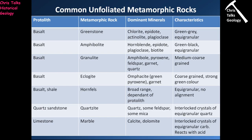The first type of unfoliated metamorphic rock is hornfels, created by contact metamorphism of a basalt or shale - high temperature, low pressure, so nothing makes the minerals align. Contact metamorphism of a sandstone and limestone gives quartzites and marbles respectively. Importantly, quartzites and marbles are not limited to contact metamorphism - they can also form in regional metamorphic settings.